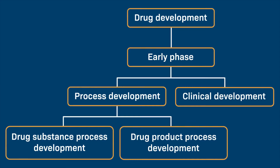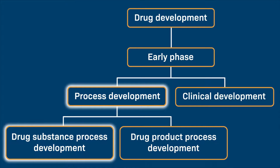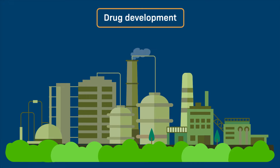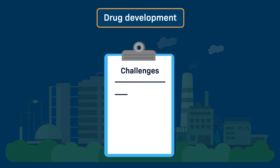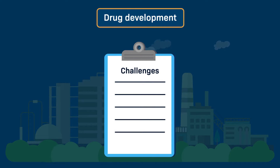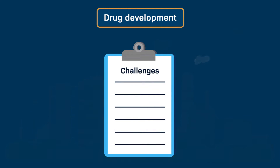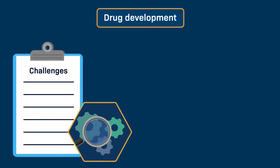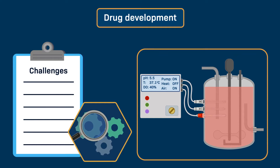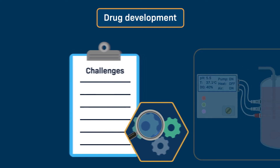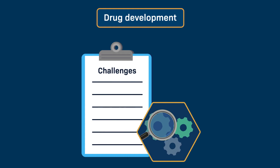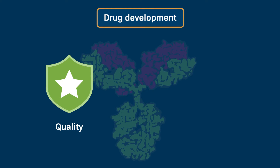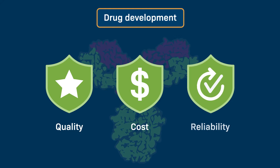To recap, process development for a drug substance is a critical part of the overall development process. It helps drug manufacturers understand what challenges, if any, may arise when making a drug substance such as a biologic. This understanding offers manufacturers troubleshooting opportunities before they transition to large-scale manufacturing of the drug. Such troubleshooting during process development ultimately ensures the optimization of product quality, raw material and investment costs, and drug reliability.